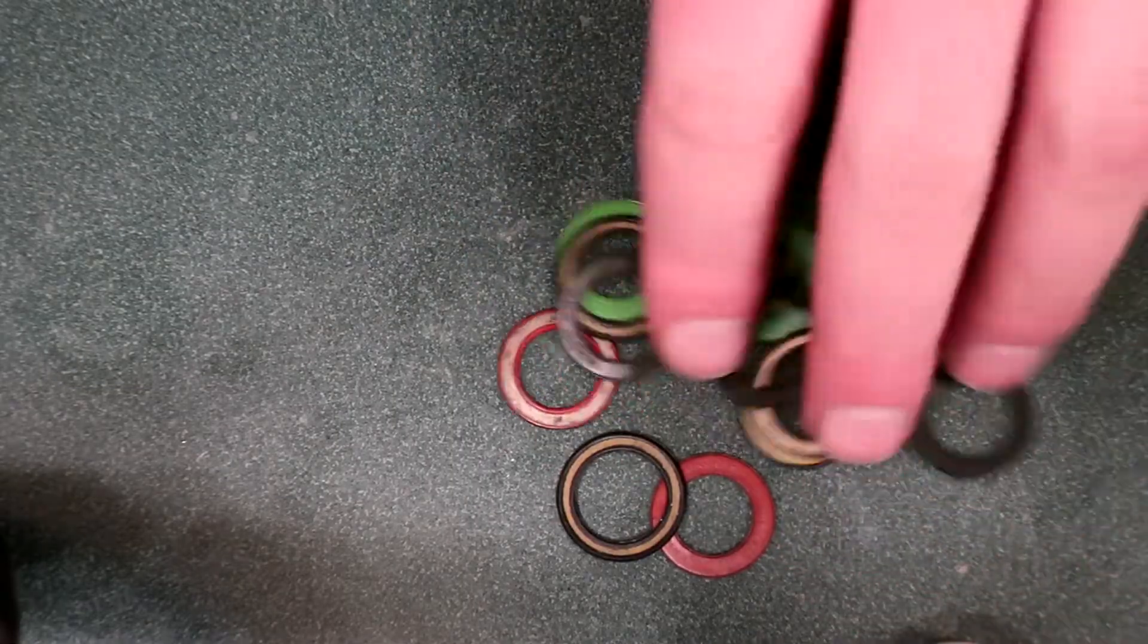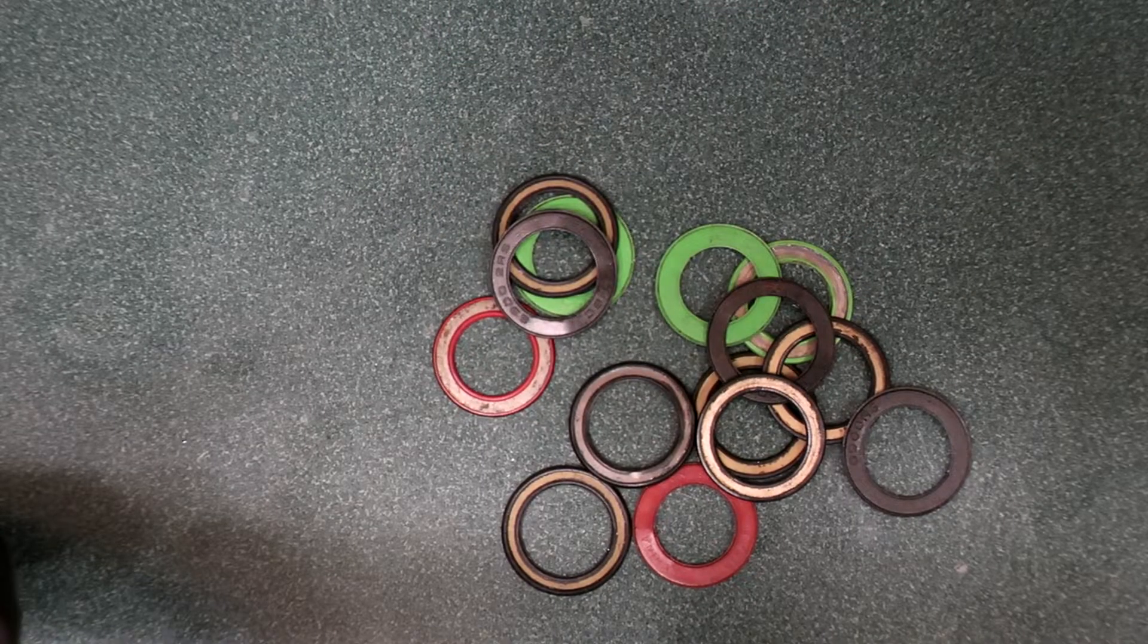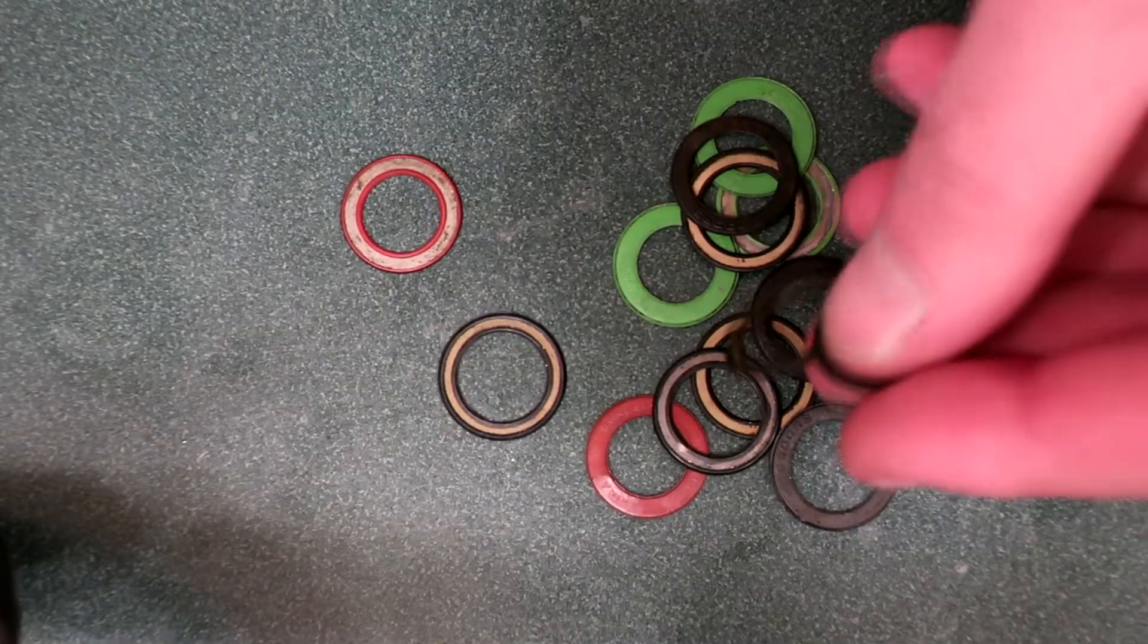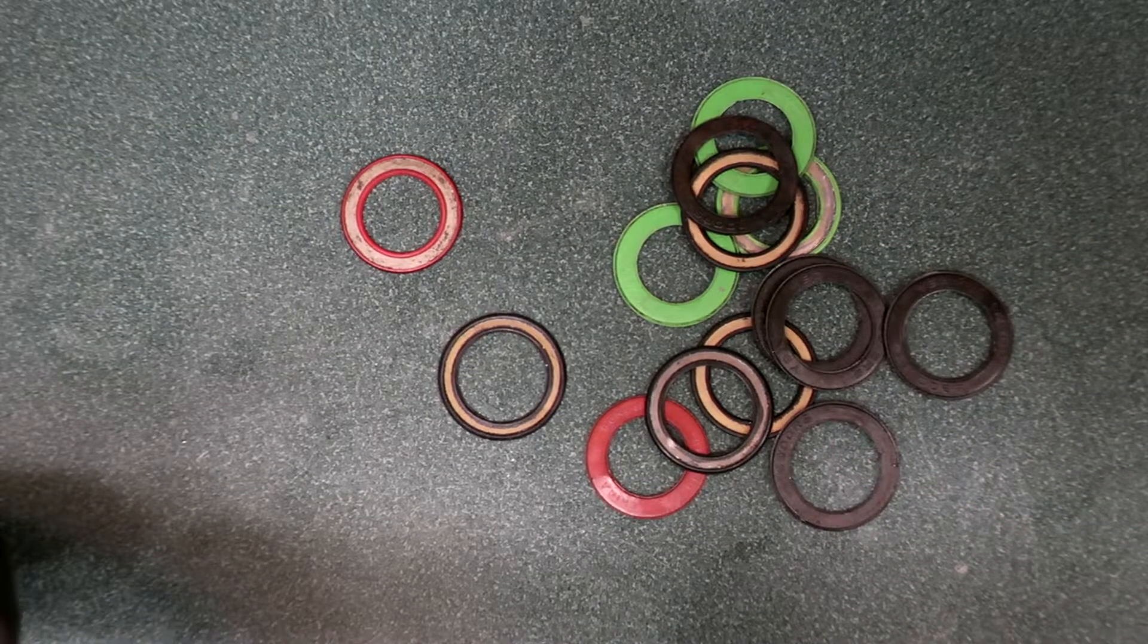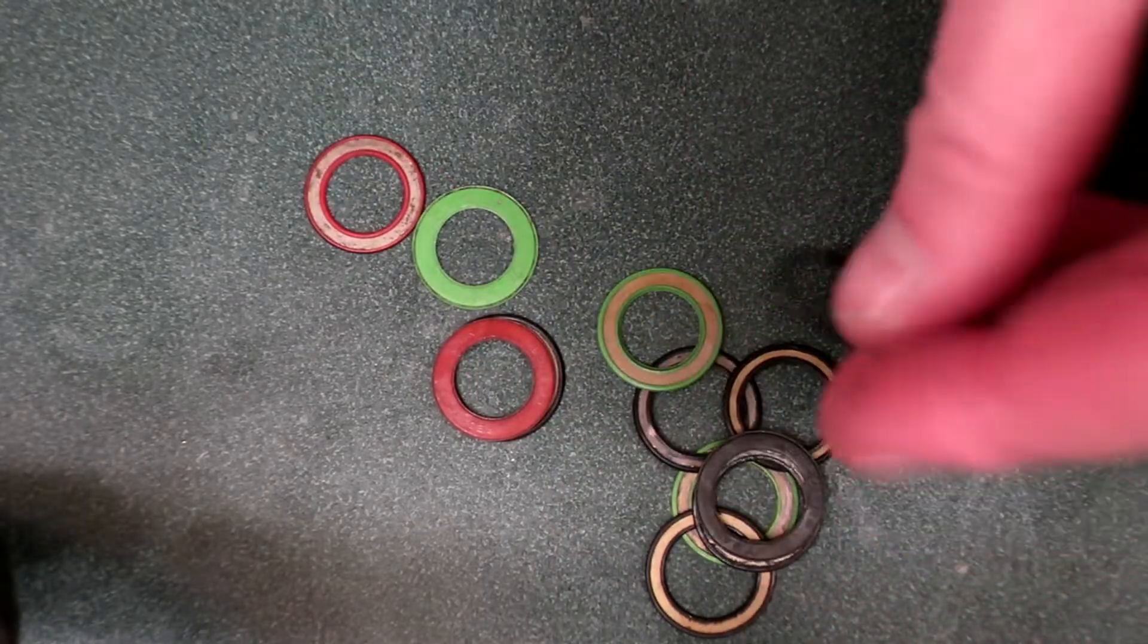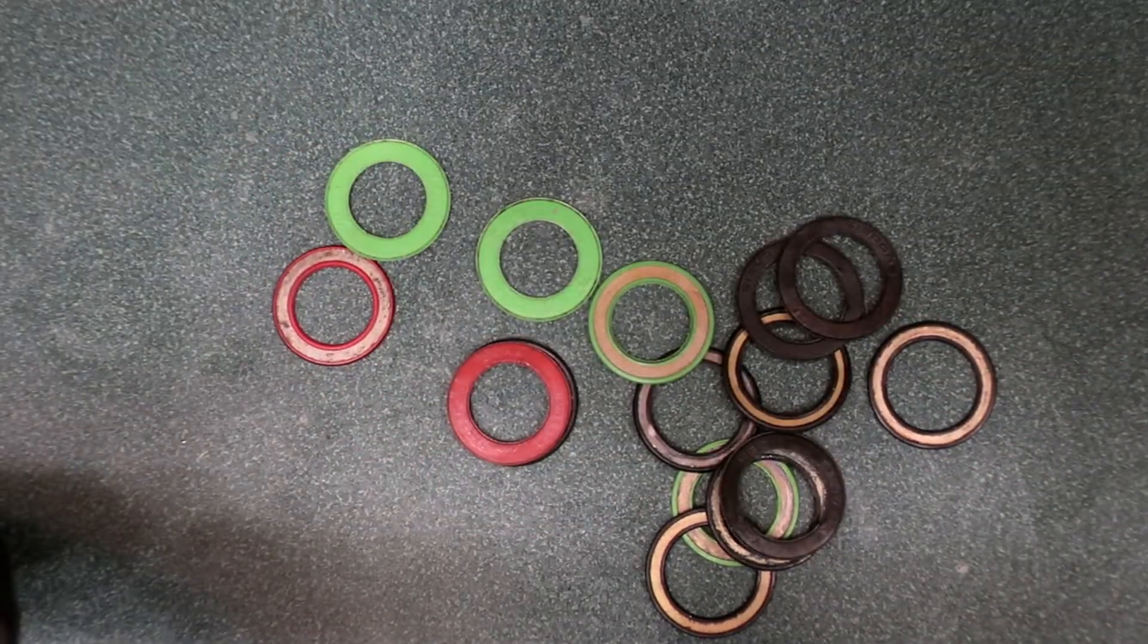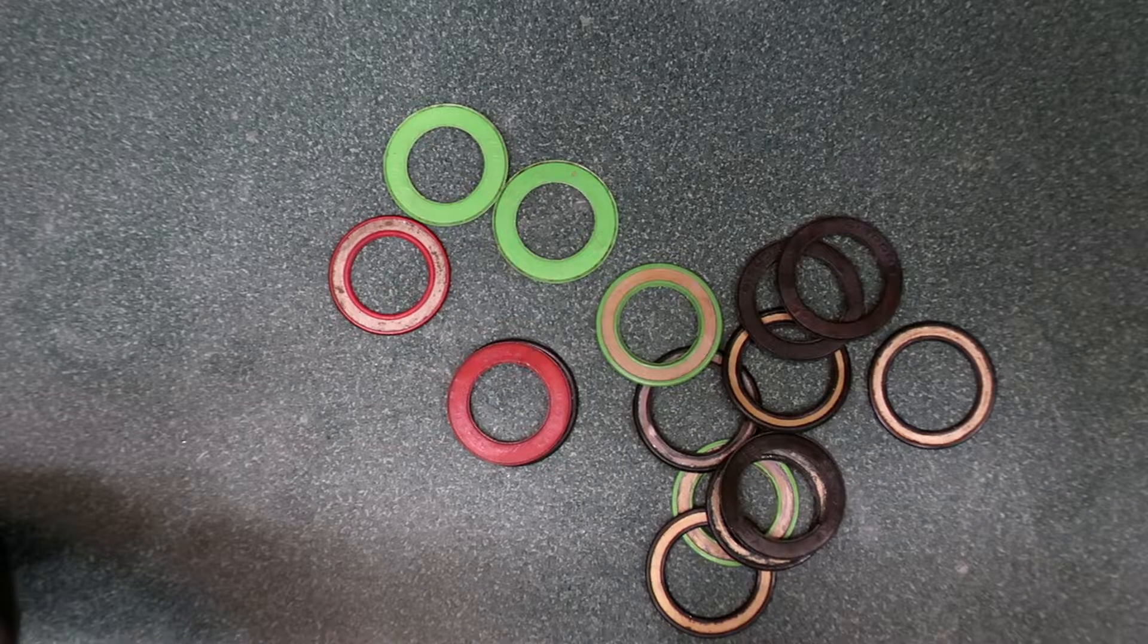If you don't have rubber shields that you've saved from old bearings, what you can do is you can buy just new rubber shields. And I'll put a link in the description, but it's like a few dollars for twelve shields. They're pretty cheap. I wish it was a few dollars for a hundred of them, but they're not quite that cheap.